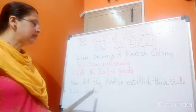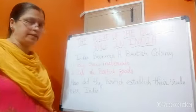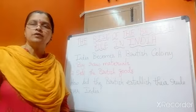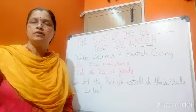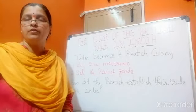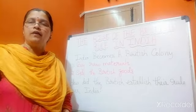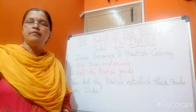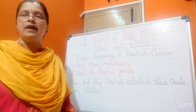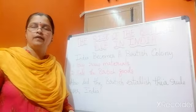Now how did the British establish their rule over India? The British defeated all the small kingdom rulers through many battles and established their rule in India.